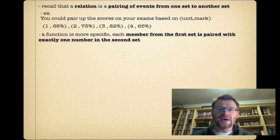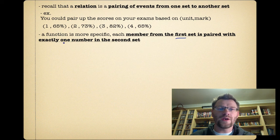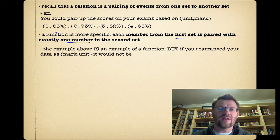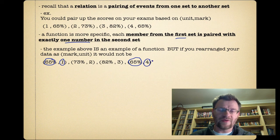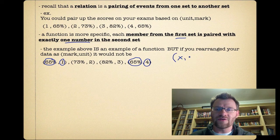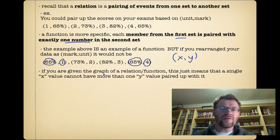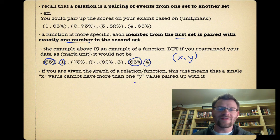A function is more specific. Each member from the first set is paired with exactly one number from the second set. The example above is an example of a function. But if you rearranged your data as mark, unit instead of unit, mark, it would not be, because from your first set, we have two 65s and they both have a different second set or different y value.